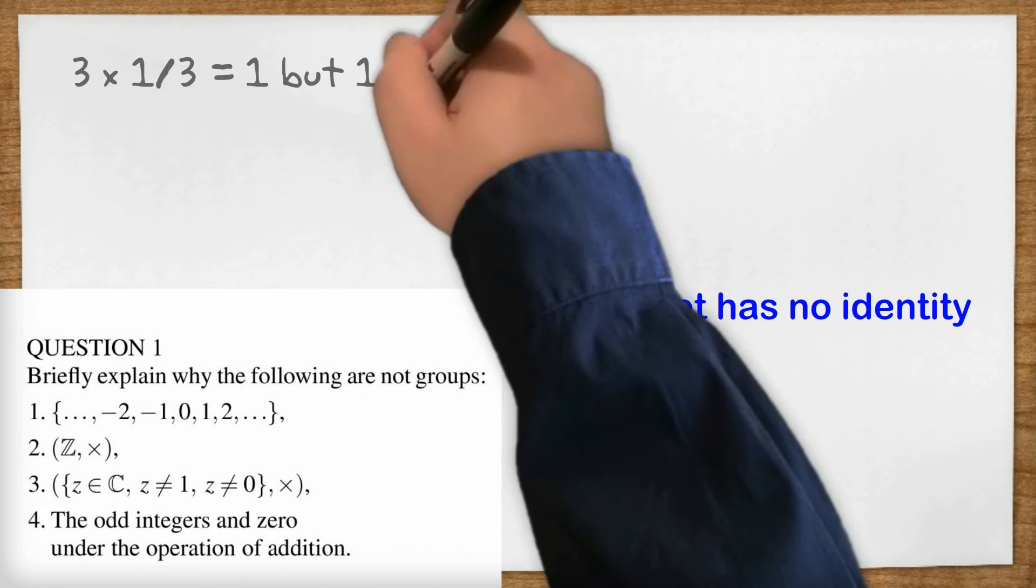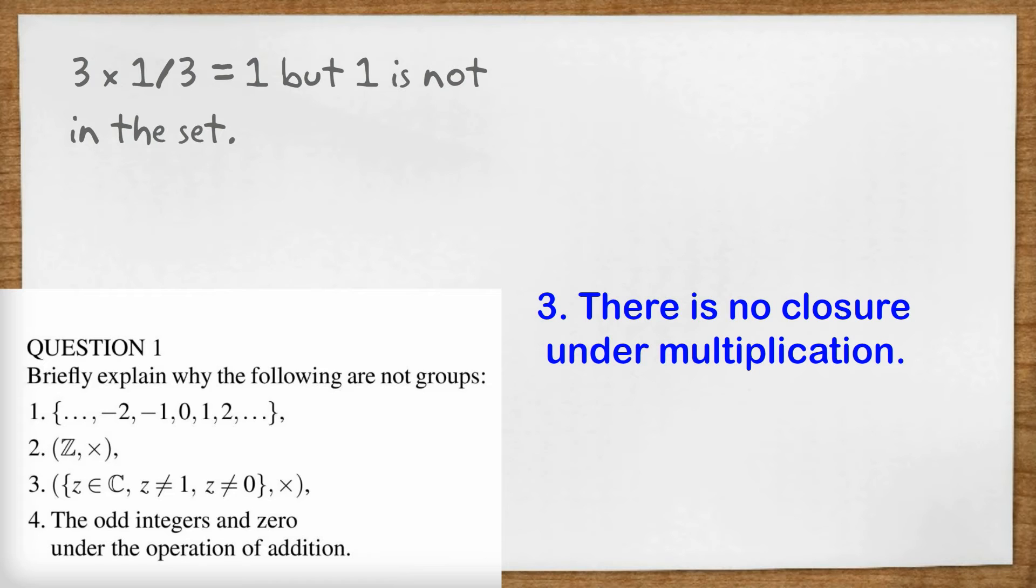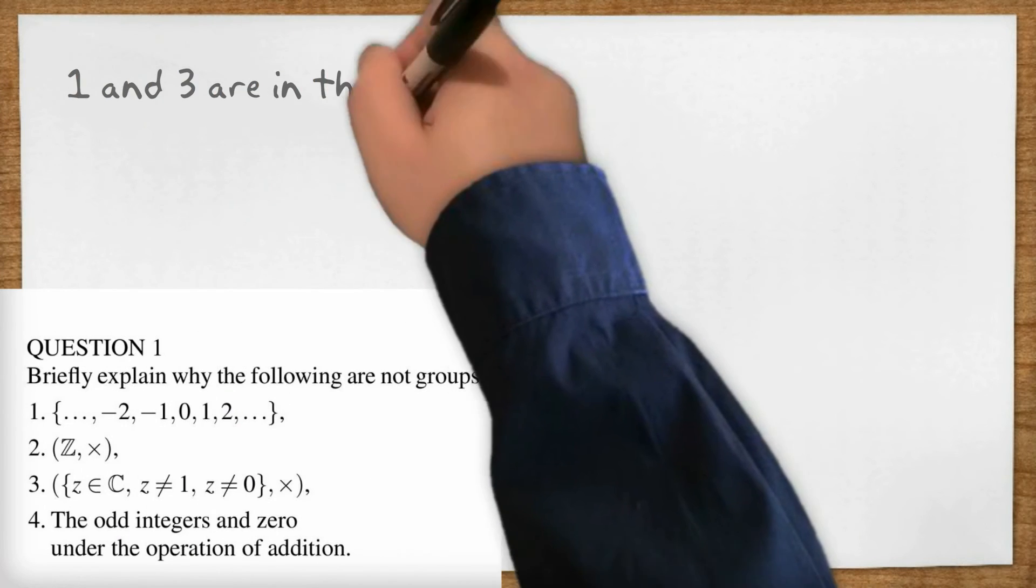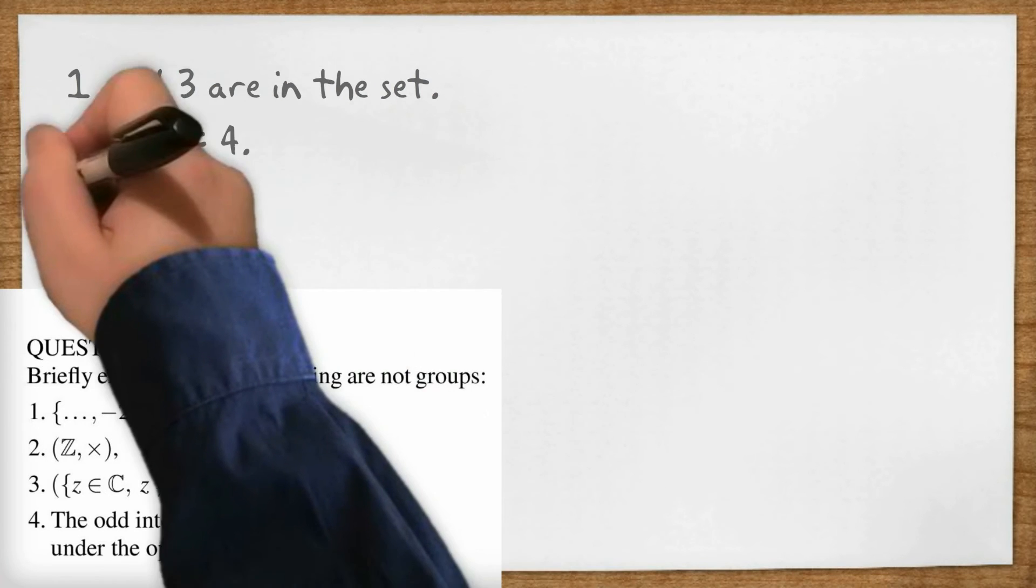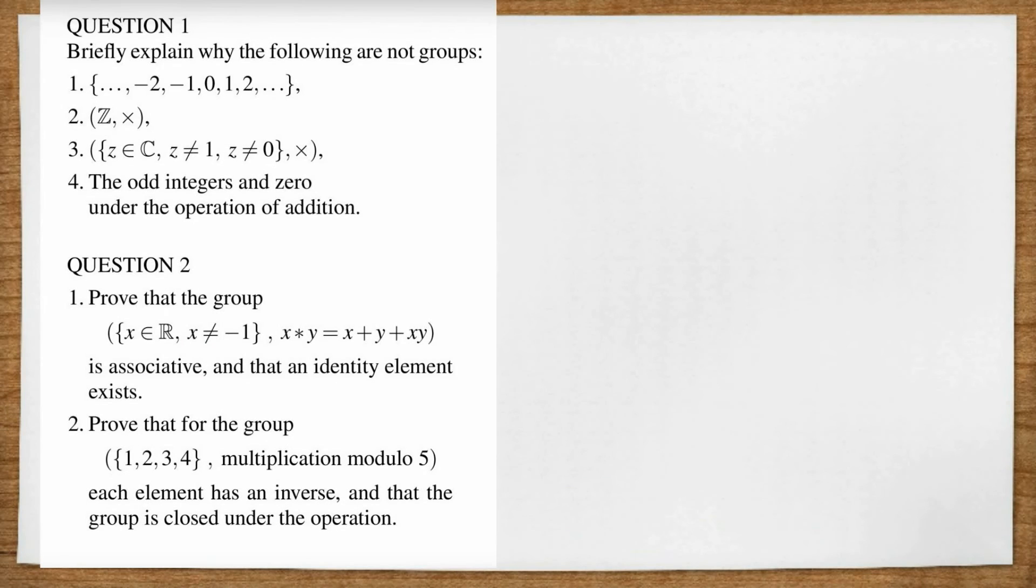That's the most obvious answer but you could also look at it another way. You could say take the number three, three times a third equals one but one is not in the set so there is no closure under multiplication. And finally on to number four. One and three are in the set, one plus three equals four but four is not in the set. So answer, the set is not closed under addition.